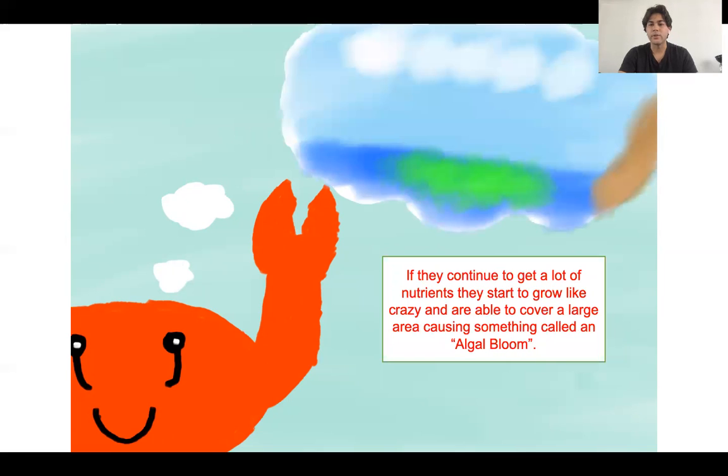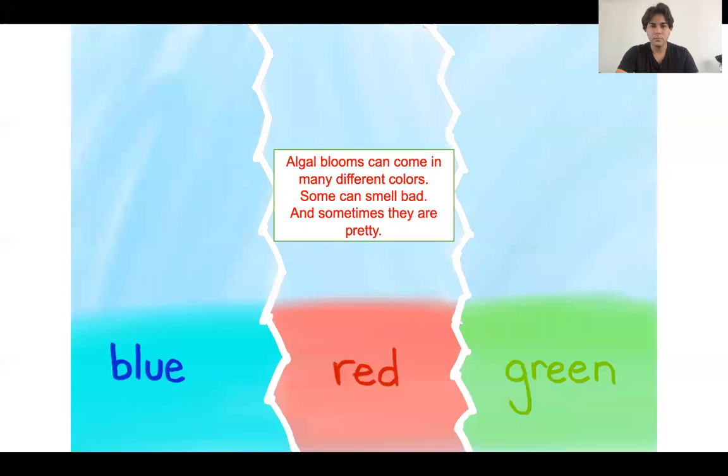If they continue to get a lot of nutrients, they start to grow like crazy and are able to cover a larger area causing something called an algal bloom. So in this little tableau you can see this little green part of the ocean or whatever body of water that can be. Because more often than not, they can be green, or sometimes they can be green. Algal blooms can come in many different colors. A lot of times they smell bad and sometimes they're really pretty. A really good example of a pretty one is actually this one bioluminescent algal bloom.